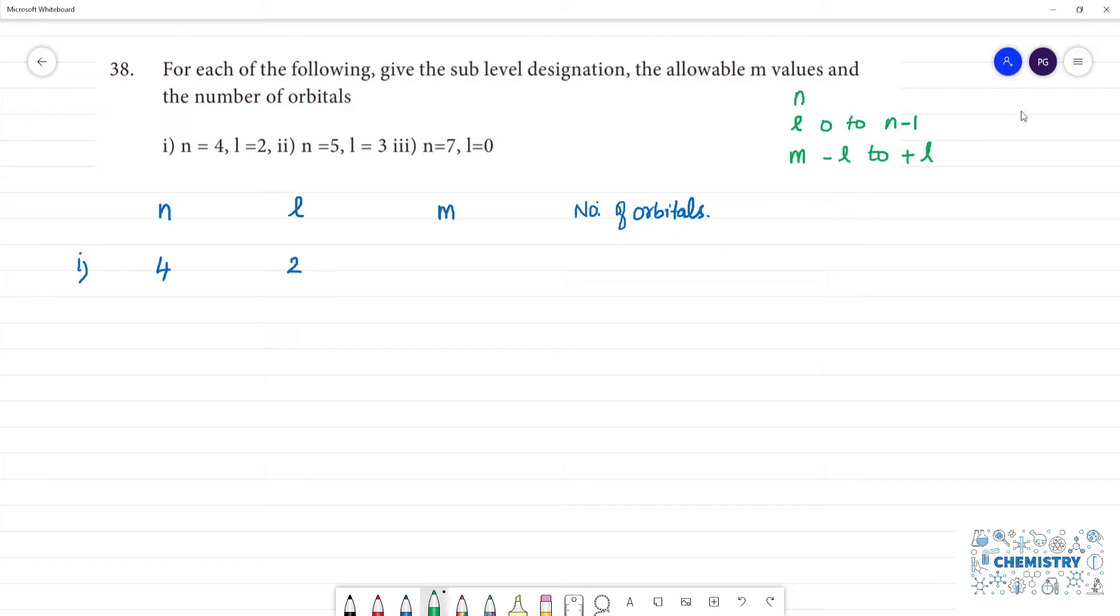Now, l is 0 is s-orbital, 1 is p-orbital, 2 is d-orbital, 3 is f-orbital. Now, first question, n value 4, l value 2. l is 2, so m value minus l to plus l.